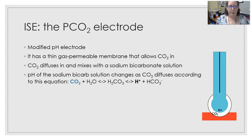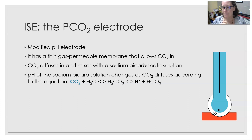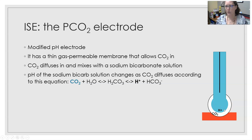A modified pH electrode is the pCO2 electrode — a gas sensing electrode. It has a thin gas-permeable membrane that allows CO2 in from the sample. The CO2 crosses over the gas-permeable membrane and interacts with a sodium bicarbonate solution, which causes a chemical reaction. As CO2 interacts with the sodium bicarbonate solution, the pH changes to produce hydrogen ions. The hydrogen ions then cross a second membrane — the glass membrane permeable to hydrogen ions only — and are then read. So it is essentially a pH electrode with an extra membrane permeable to CO2.